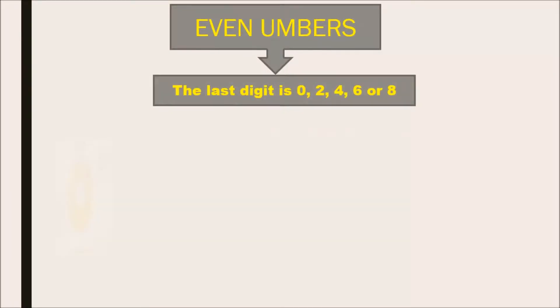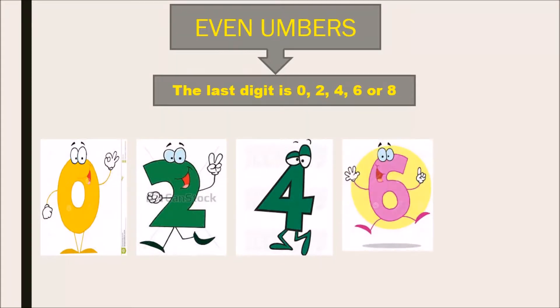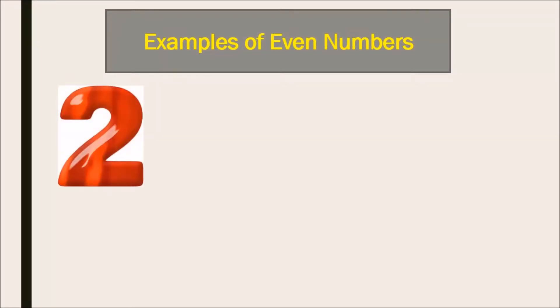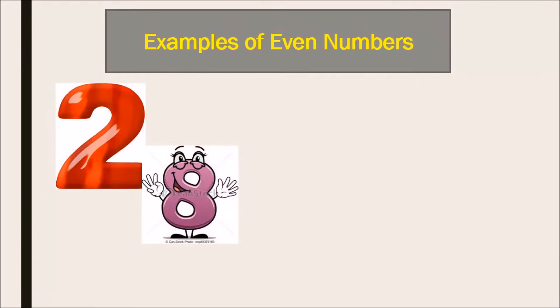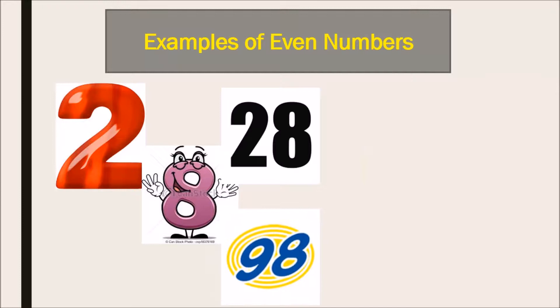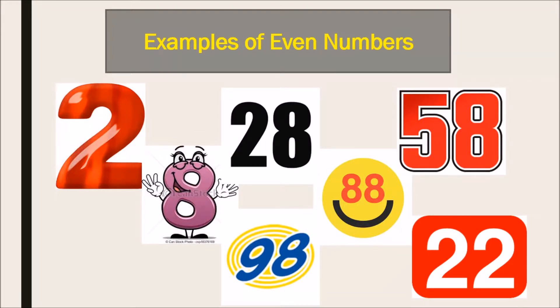The even number ends in zero, two, four, six, or eight. Some examples of even numbers: two, eight, twenty-eight, ninety-eight, eighty-eight, fifty-eight, twenty-two. These are some examples of even numbers. They end in zero, two, four, six, or eight.